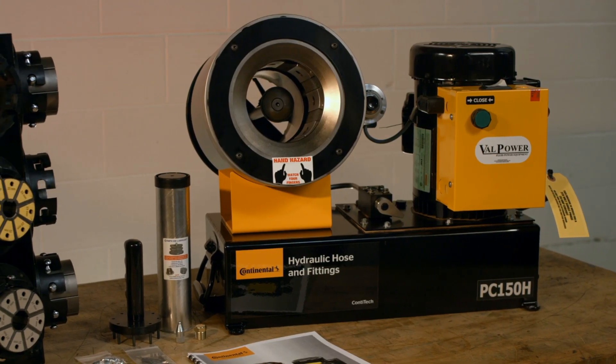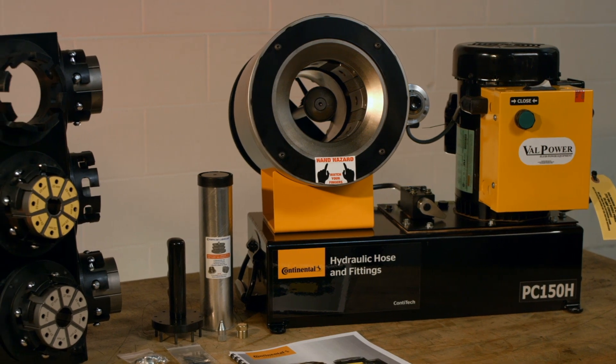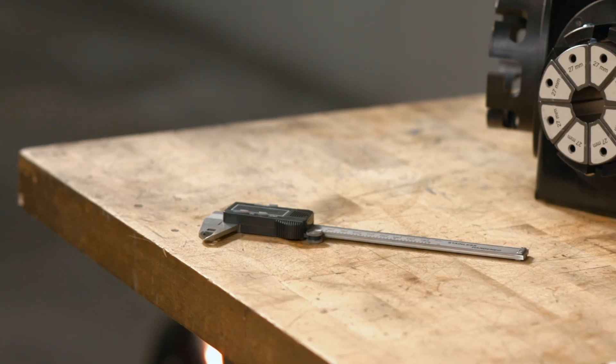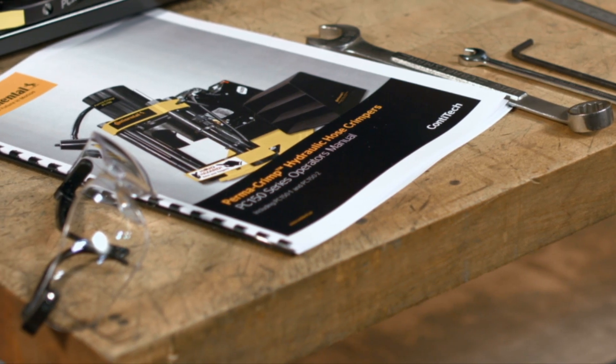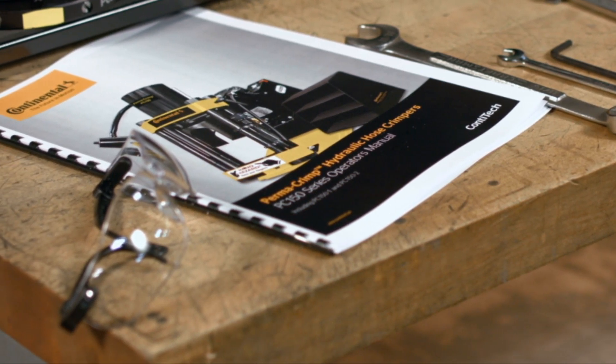In addition to the Crimper and dies, the only additional tools that may be required for operation are calipers or micrometers, as well as safety glasses or other protective devices that may be required by your employer.